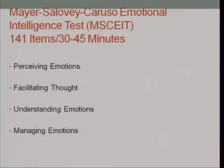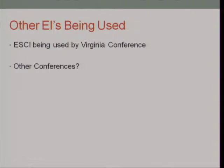In terms of the MSCEIT, it has 141 items — roughly the same number as the Bar-On — and takes about 30 to 45 minutes. It looks at the areas of perceiving emotions, facilitating thought, understanding emotions, and managing emotions.